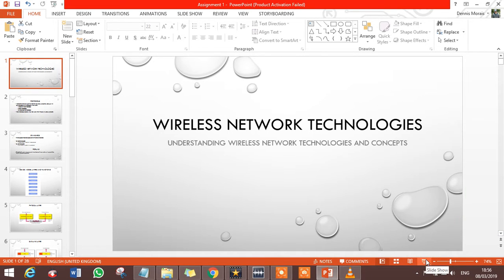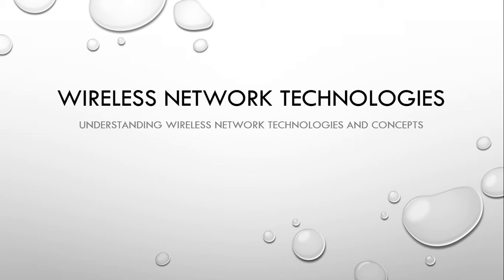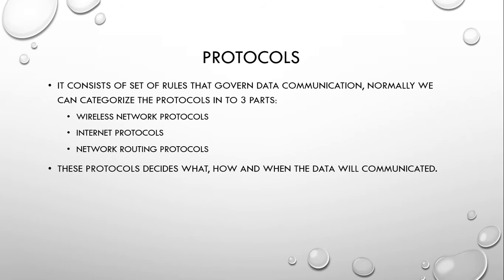In this video, we will discuss wireless network technologies and its concepts. First, we'll talk about protocols, which consist of a set of rules needed to start data communication. Protocols are categorized into three types: wireless network protocols, internet protocols, and network routing protocols. Protocols define what is communicated, how it is communicated, and when it is communicated.